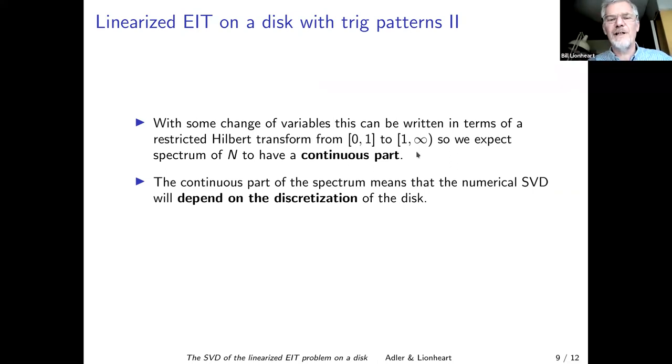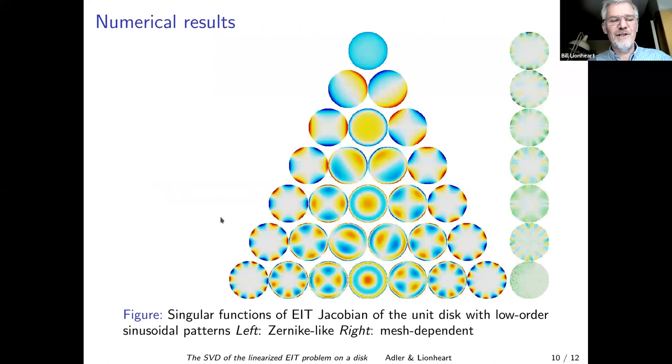So we expect the spectrum of N to have a continuous part, and that was based on just the circularly symmetric part. The continuous part of the spectrum means that the eigenvalues of the matrix that we get as a discrete approximation will depend on how we discretize the disk when we do it numerically. Andy, over to you.